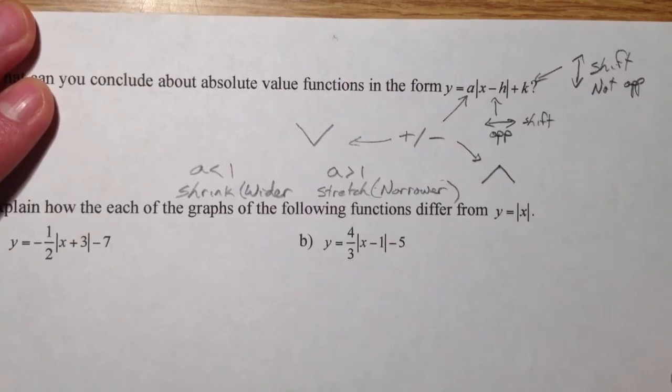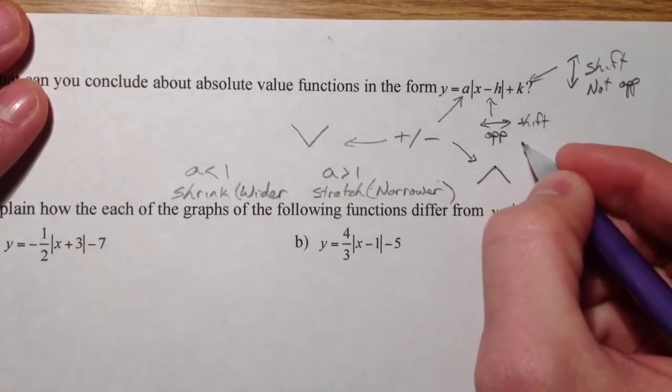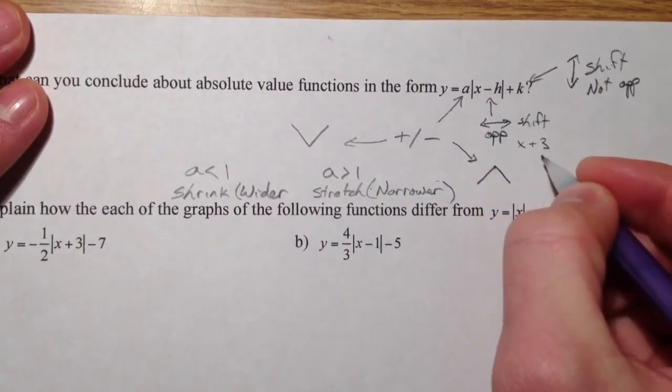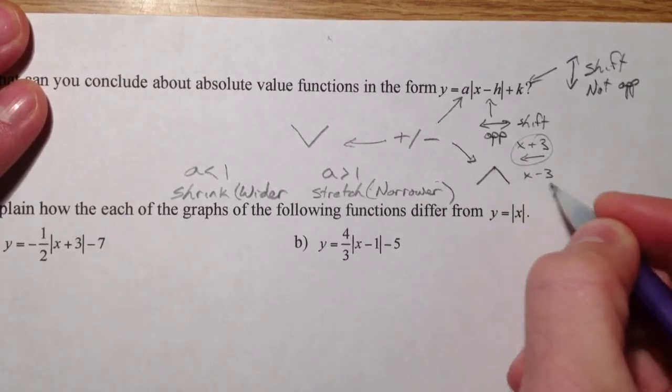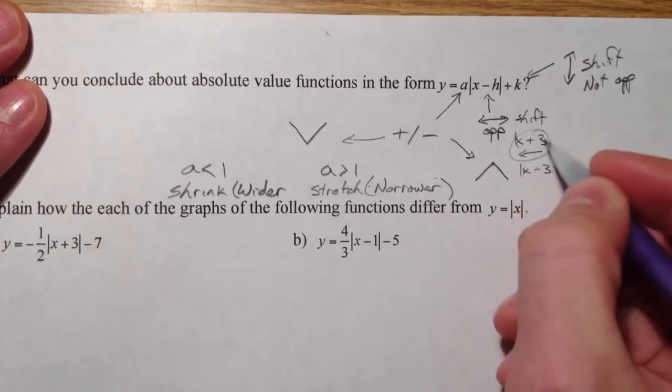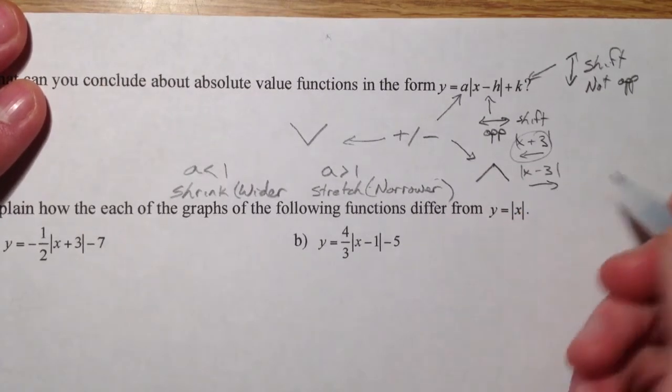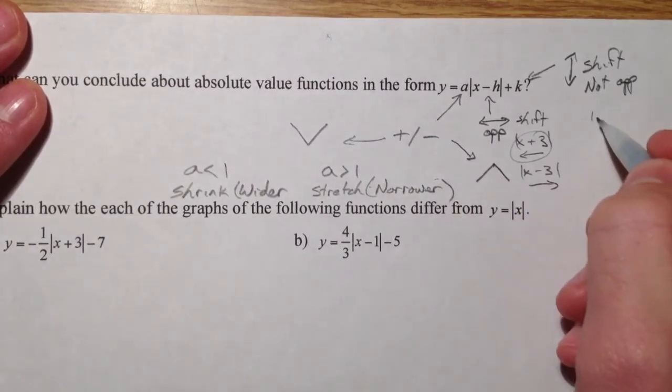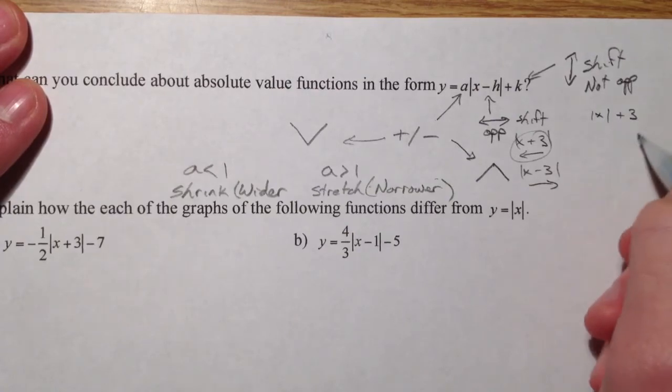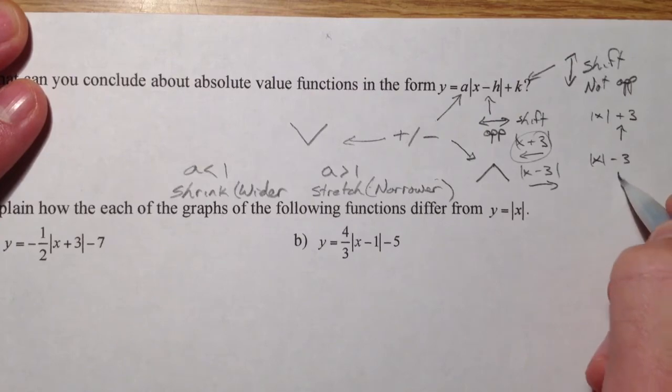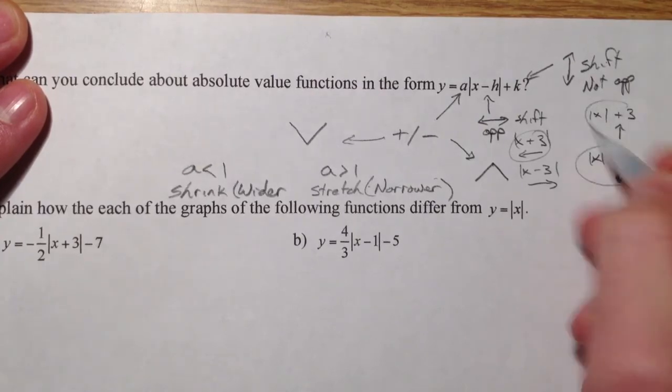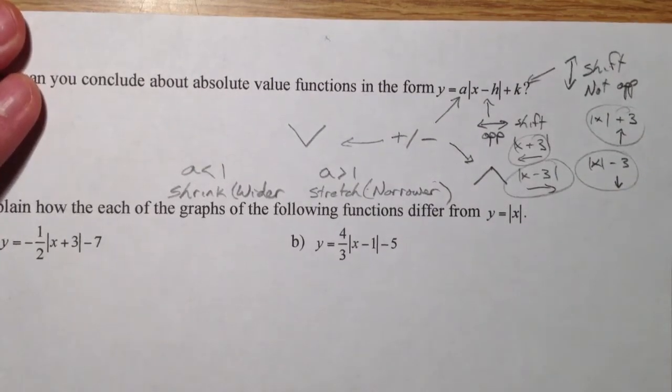So, what do I mean by opposite and not opposite? If it's X plus 3, moves it to the left. X minus 3, moves it to the right. And if it's absolute value of X plus 3, it moves it up. Absolute value of X minus 3, moves it down. So, there you have it.